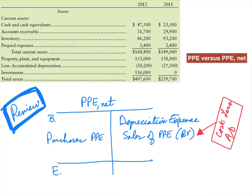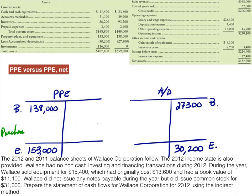So that's a little bit of review of the property, plant, and equipment net account, which we don't use in this problem because again we're given property, plant, and equipment and its accumulated depreciation account separately. In this situation we need both T-accounts. So we have our property, plant, and equipment and our accumulated depreciation account here, and you can see I've provided the beginning and ending balances that they gave us.